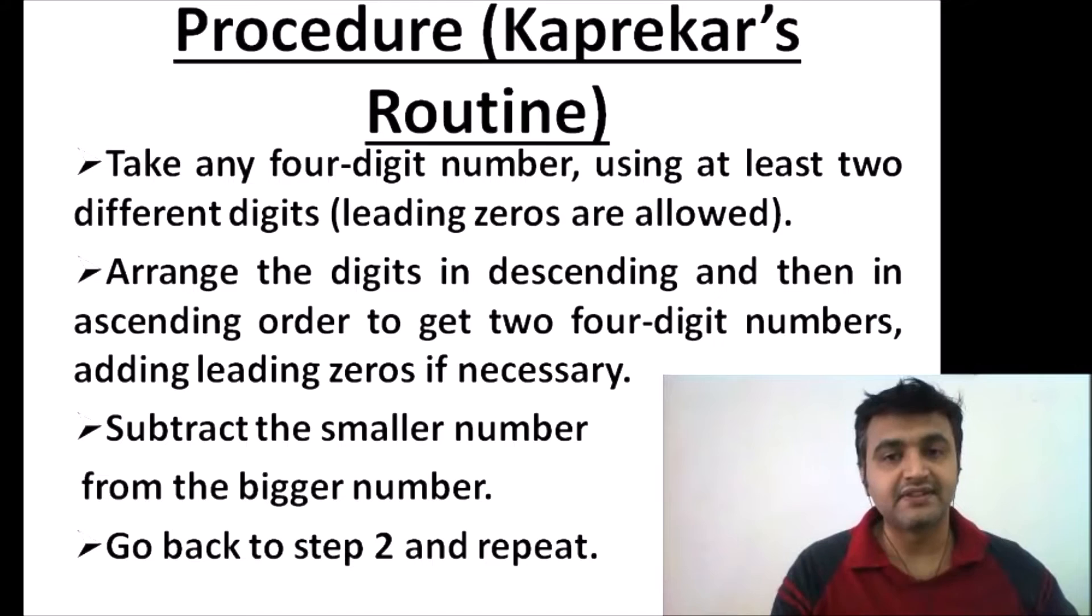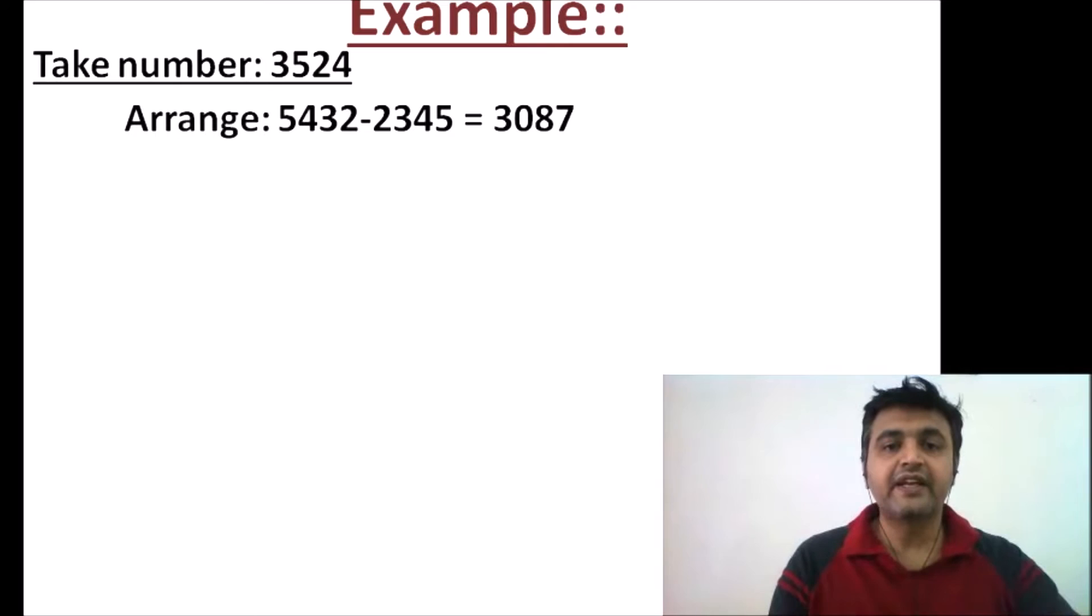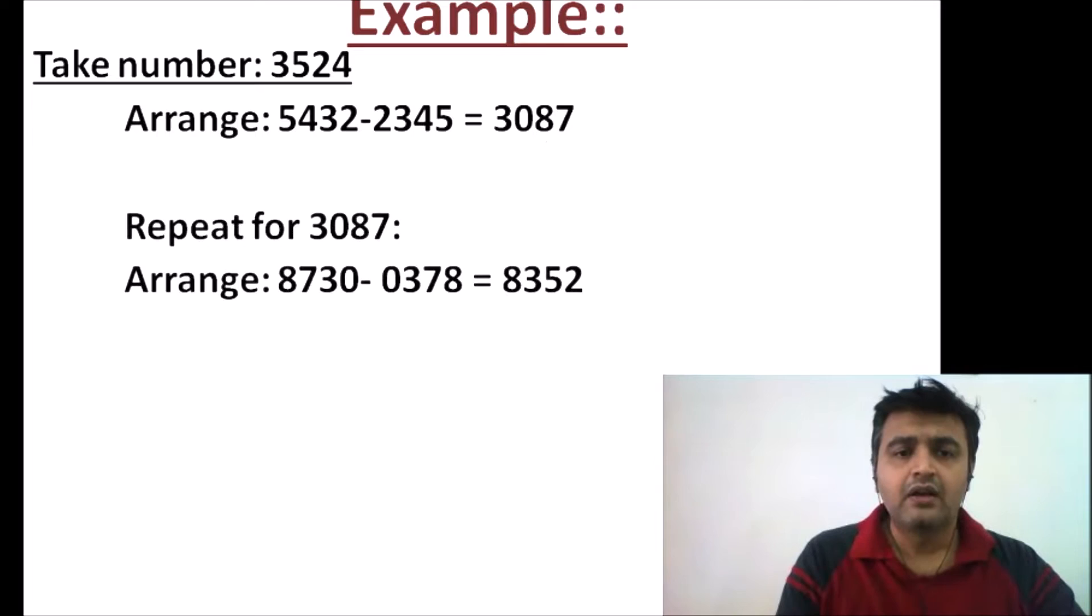Let's see this with an example. Suppose I take the number 3524, any random number. First arrange in descending order: 5432, and then in ascending order: 2345. Subtract them and you get 3087. Now repeat the same procedure. For 3087, descending order is 8730 minus ascending order 0378, which gives 8352.